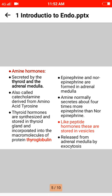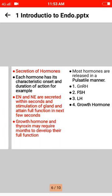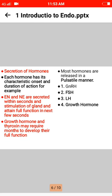Epinephrine and norepinephrine are formed in the adrenal medulla. The adrenal medulla normally secretes about four times more epinephrine than norepinephrine. Like peptide hormones, these are stored in vesicles and released from the adrenal medulla by exocytosis.